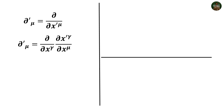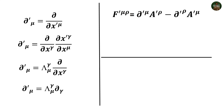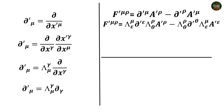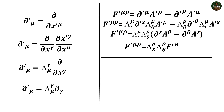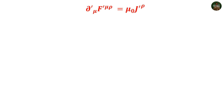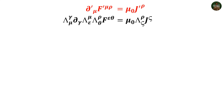We convert each term: the covariant partial derivative del'_mu = d/dx'^mu can be replaced via chain rule as del/dx^gamma times dx^gamma/dx'^mu = Lambda^gamma_mu. So del'_mu = Lambda^gamma_mu del_gamma. For the contravariant field tensor F'^(mu nu), expanding in terms of four-vector differentials and applying transformations for both del and A's, we get F'^(mu nu) = Lambda^mu_epsilon Lambda^nu_theta F^(epsilon theta) — the standard transformation for a rank-2 tensor with two Lambdas. For the four-current density, being a four-vector, it transforms with a single Lambda: J'^rho = Lambda^rho_zeta J^zeta.